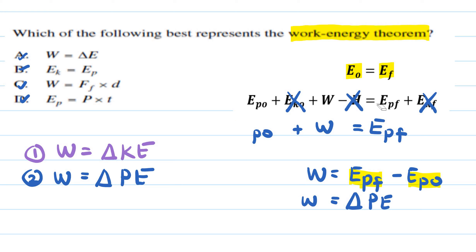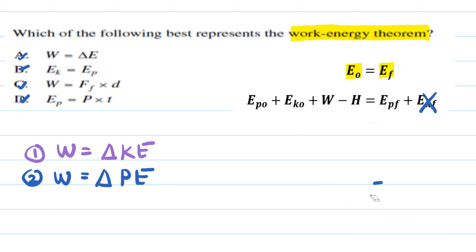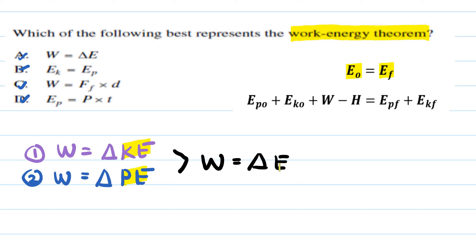There can be different variations coming from the work-energy theorem. Looking at both cases together — since kinetic energy and potential energy are both forms of energy — work is really a change in energy. So option A is the best answer for this case.